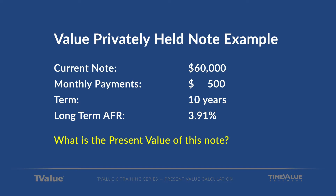Let's do another example of a present value calculation and value a privately held note. The current note is $60,000, the payments are $500 per month, and the term is 10 years. This would be a family note. If you do the math, there is no interest on this note — but the IRS says you have to charge interest. The minimum rate required is based upon the applicable federal rate, or AFR, using the rate appropriate for the term. Since we have 10 years, we'll use the long-term AFR rate, which at this point in time was 3.91%.